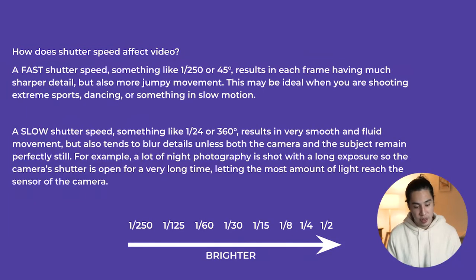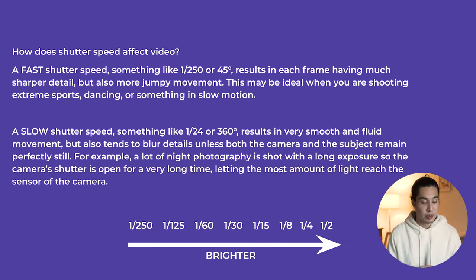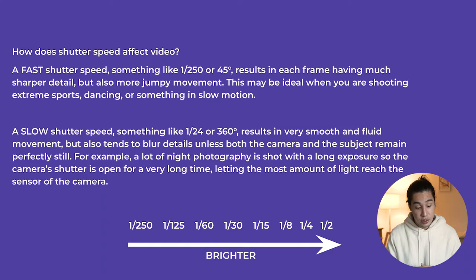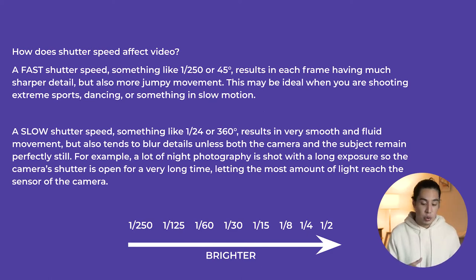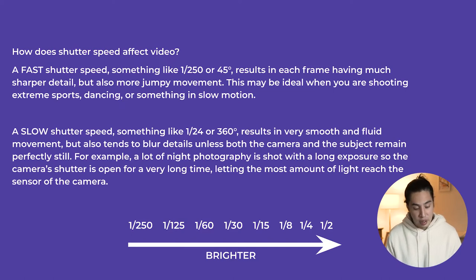How does shutter speed affect your video? A fast shutter speed, something like 1/250, results in each frame having sharper detail but also more jumpy movement. This may be ideal when shooting extreme sports, dancing, or something in slow motion — we'll be talking about frames per second, which really correlates with shutter speed. A slow shutter speed, something like 1/24, results in very smooth and fluid movement, but this also turns to blurred details unless both the camera and subject remain perfectly still. For example, a lot of night photography is shot with a long exposure, so the camera shutter is open for a very long time, letting in as much light as possible to reach the sensor.